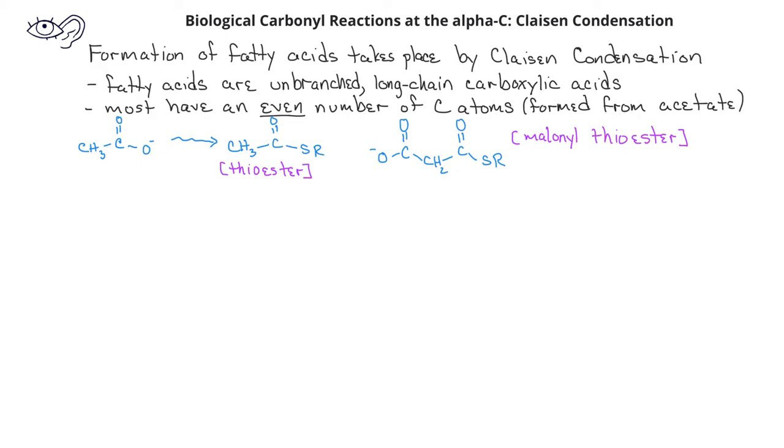The first step of the process is a Claisen condensation. The nucleophile is formed by decarboxylation of the malonyl thioester. This nucleophile forms an association with the acetate thioester, and after the SR group leaves, the beta-ketothioester is formed.